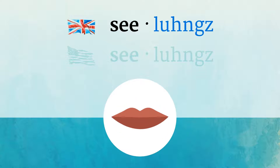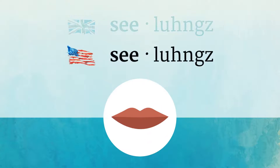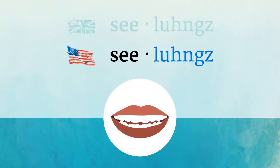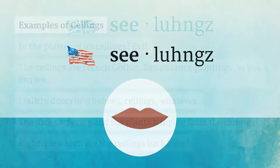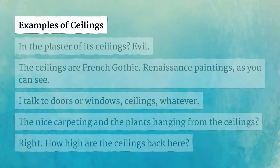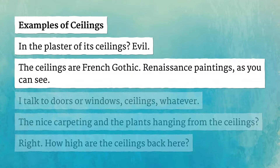Ceilings. Examples of ceilings — in the plaster of its ceilings, the ceilings are French Gothic Renaissance paintings.